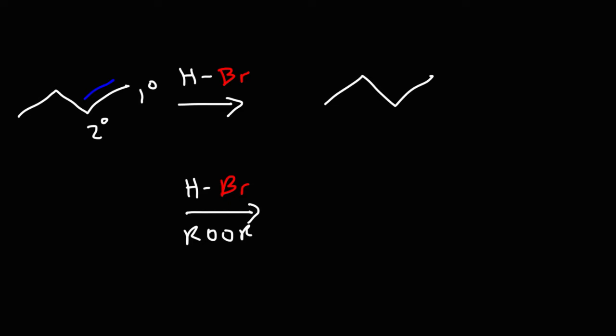This reaction proceeds with Markovnikov chemistry, which ultimately results in the bromine atom being on the more substituted carbon atom. In this case, the secondary carbon atom.